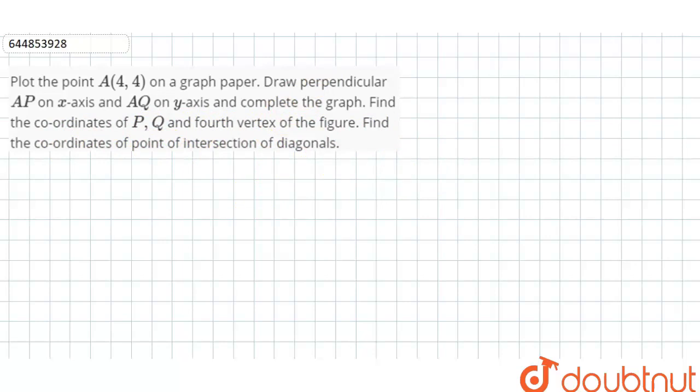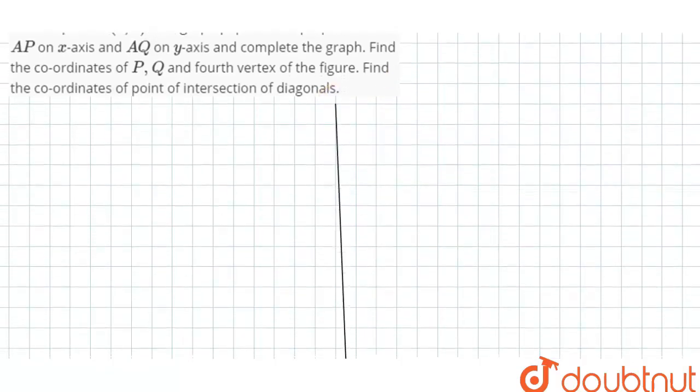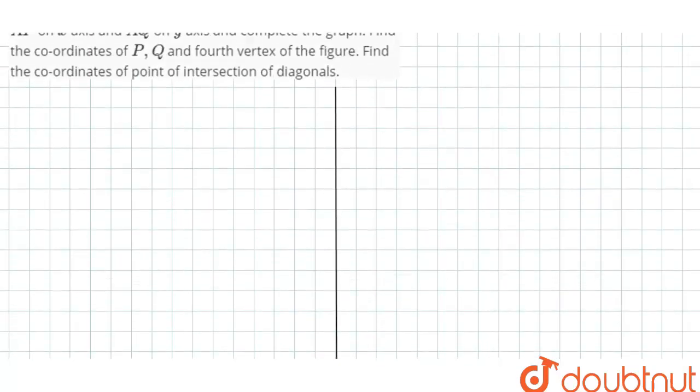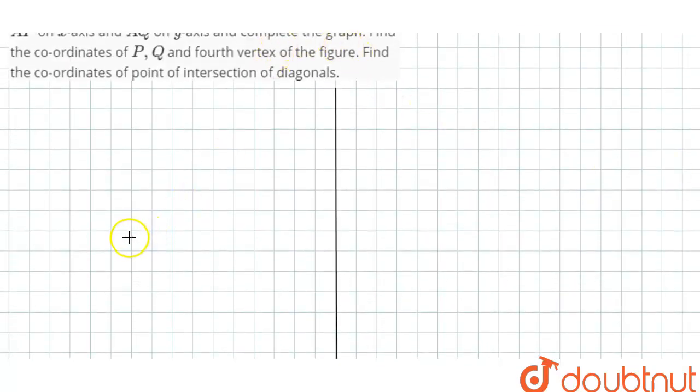So first of all, we'll draw the X and Y axis. We'll draw the Y axis and this will be the X axis. Now we'll mark the points. This is Y-axis and this is X-axis.